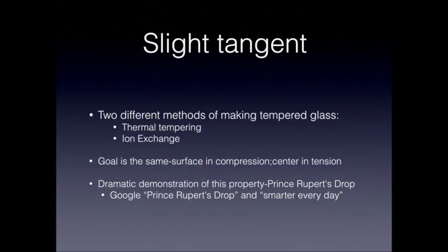The object created with this method is called Prince Rupert's Drop — a teardrop-shaped piece of molten glass that's dropped into water and cooled rapidly. This creates compressive forces on the surface and destructive forces in the center. If you Google 'Prince Rupert's Drop' and 'Smarter Every Day,' you'll find a fantastic visual demonstration including a very high frame rate fracturing of this glass. That example illustrates thermal tempering.